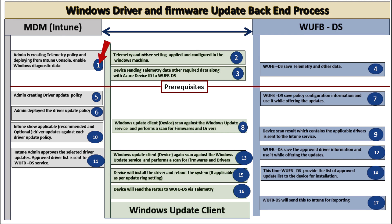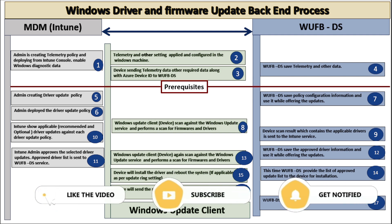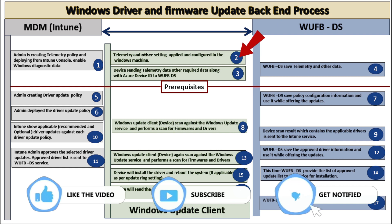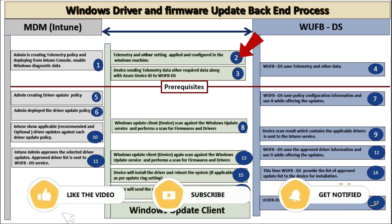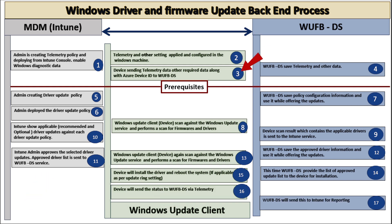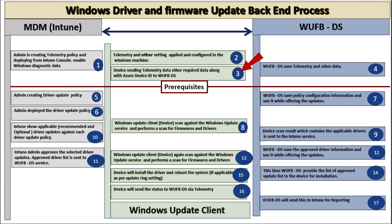During the prerequisite phase, the admin is creating a telemetry policy and deploying it from the Intune console, also enabling the Windows diagnostic data and configuring other prerequisites. Once the telemetry policy is deployed to the device, telemetry and other settings are applied and configured on the Windows machine. Then the device sends the telemetry data and other required information, along with the Azure AD device ID, to the Windows Update for Business Deployment Service, which saves the telemetry and other information for future use.